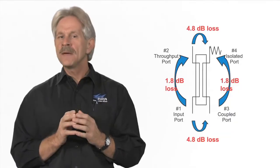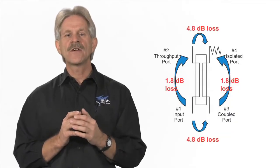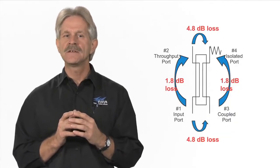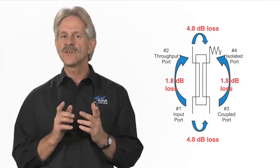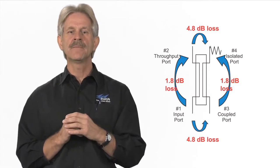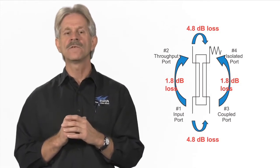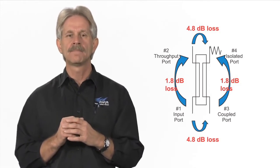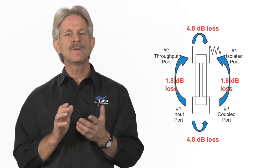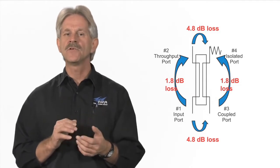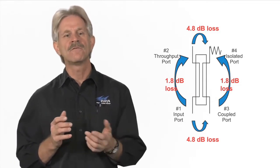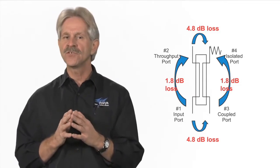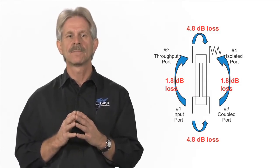To maintain satisfactory signal-to-noise ratios in a DAS, the signal loss at any antenna should be limited to no more than 25 to 30 dB. This can be accomplished by using the appropriate four-port directional couplers instead of splitters.